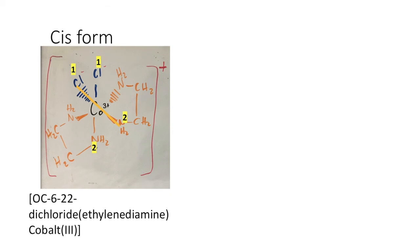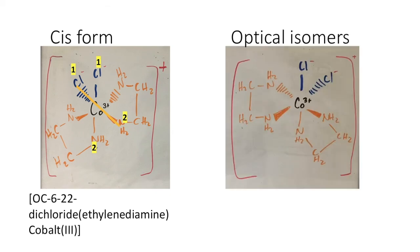This cis form has another isomer which is an optical isomer. The mirror image of the cis isomer forms a pair of optical isomers which have identical behavior.